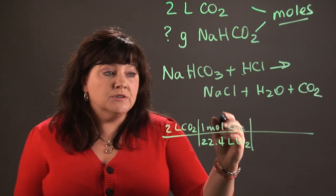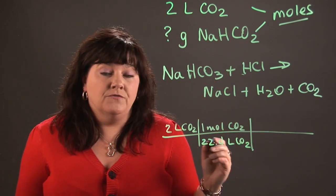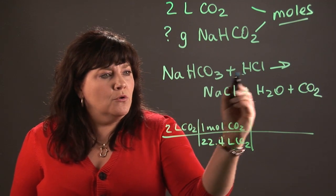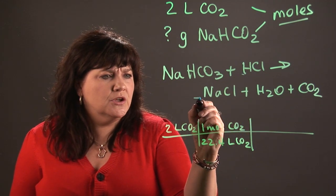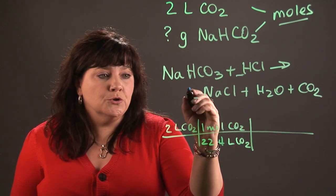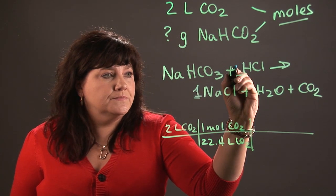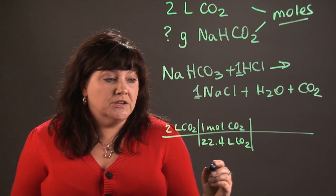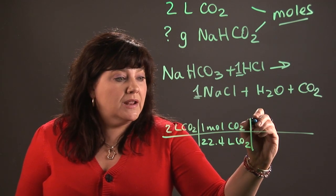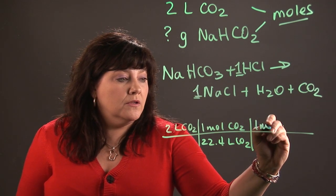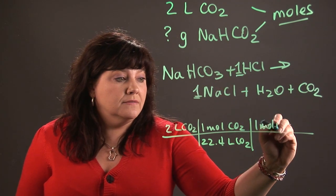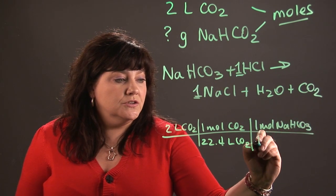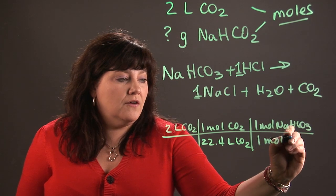All right, now it's time to go to our balanced chemical equation and find what we call our mole ratio. So if we'll look, there are no numbers in front of these. Now whenever there's no numbers, we're going to assume the number one. So all of these substances are in a one-to-one relationship to each other. So we would have one mole of sodium bicarbonate, NaHCO3, to one mole of carbon dioxide.